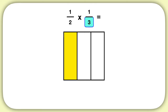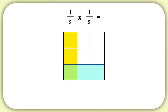We're multiplying by a third, so we'll break the model into three equal sections. And because we're multiplying by one-third, we'll shade in only one of these sections. Now from looking at the model, what is the answer to one-third times one-third?